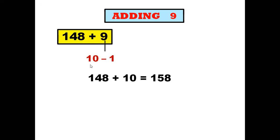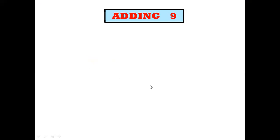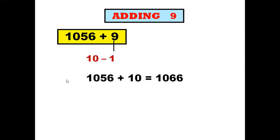Let us take another example: 1056 plus 9. Same way, 10 minus 1 is 9, so we add 10 to 1056, which gives us 1066. Then we subtract 1 from 1066 to get 1065, which is the answer.